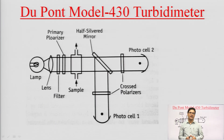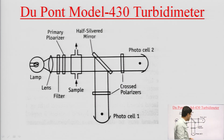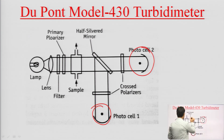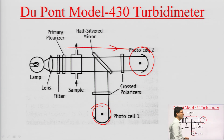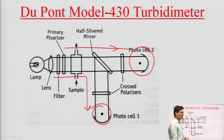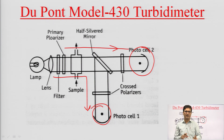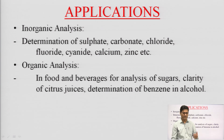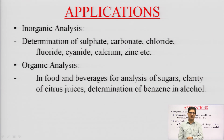A modified version is the DuPont Model 430 Turbidimeter. It uses two types of detectors: one at 90 degrees and one at 180 degrees. The detector in the straight-line (180°) arrangement is used for turbidimetric determinations, while the detector at 90 degrees is used for nephelometric determinations. Either the calibration curve method or the C1·L1 = C2·L2 equation with the Duboscq colorimeter can be used to determine unknown concentrations.